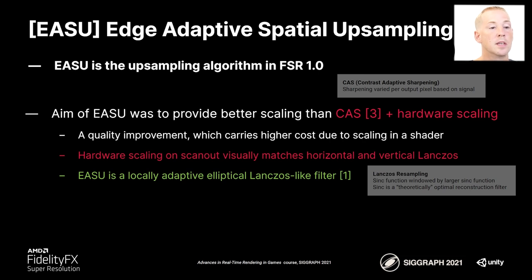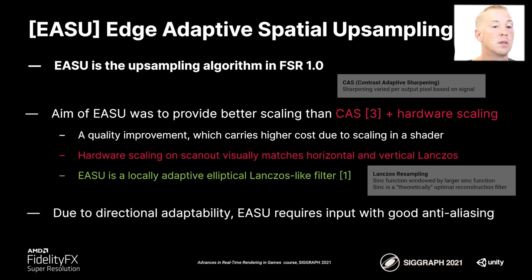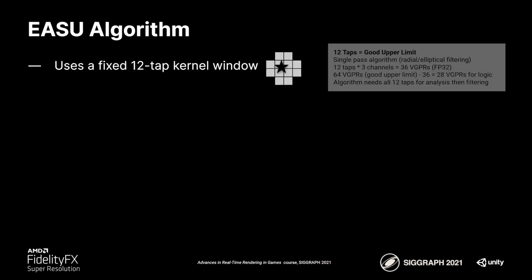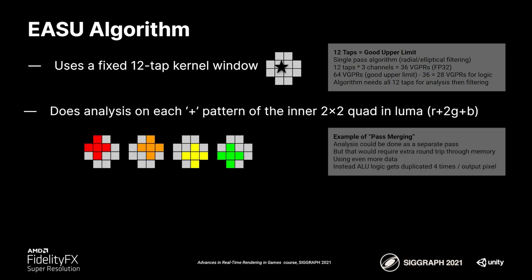Due to this adaptability, EASU requires input with good anti-aliasing as a base. It's not an anti-aliasing solution by itself, but it does require AA going into it. EASU starts with a 12-tap fixed kernel window — the nearest 12 taps in a circular pattern. The reason 12 taps was chosen instead of 16 is that with 12 taps, you only need 36 registers for the 32-bit version. EASU requires analysis on those 12 taps before it can figure out the filter kernel. To avoid reading them twice, it keeps all of them in registers during the full algorithm. Going higher would run out of temporary registers for logic, and the goal is to stay around or under 64 registers — a good upper limit on AMD's hardware to be able to hide latency.